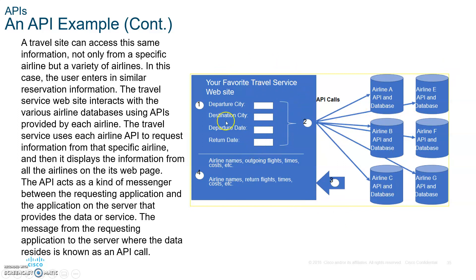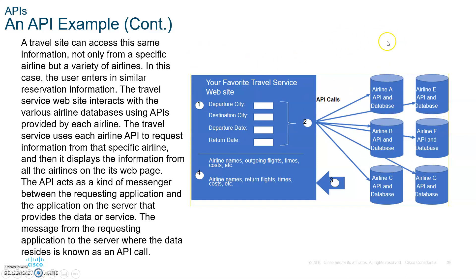All you have to do is design your application, attach the API, and the API will look at all the information — because you followed the rules — and go in and use that information to access databases and return your result. The API is the middleman for the vendor. You just write your application, connect it to the API, and the API gathers all the information you need — you don't need to learn their operating system from scratch.